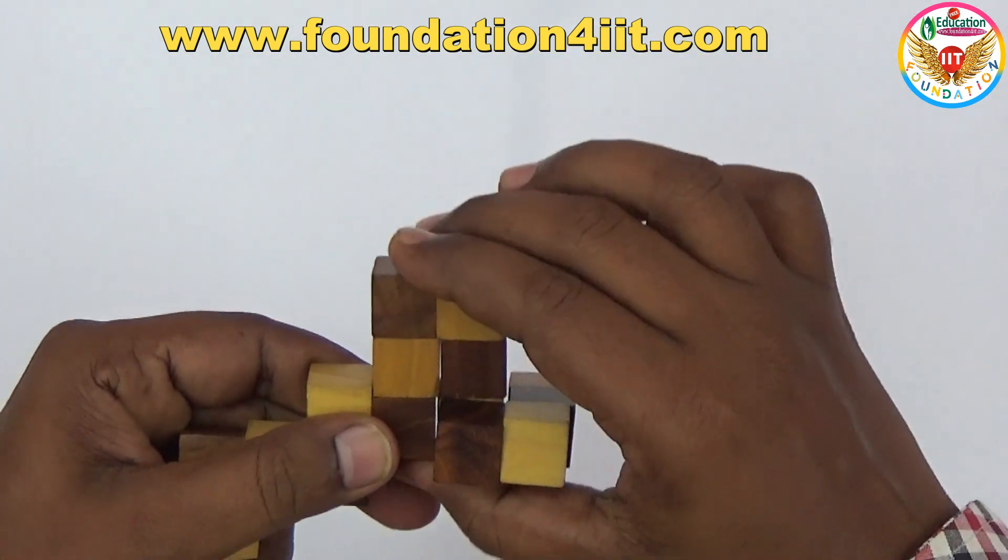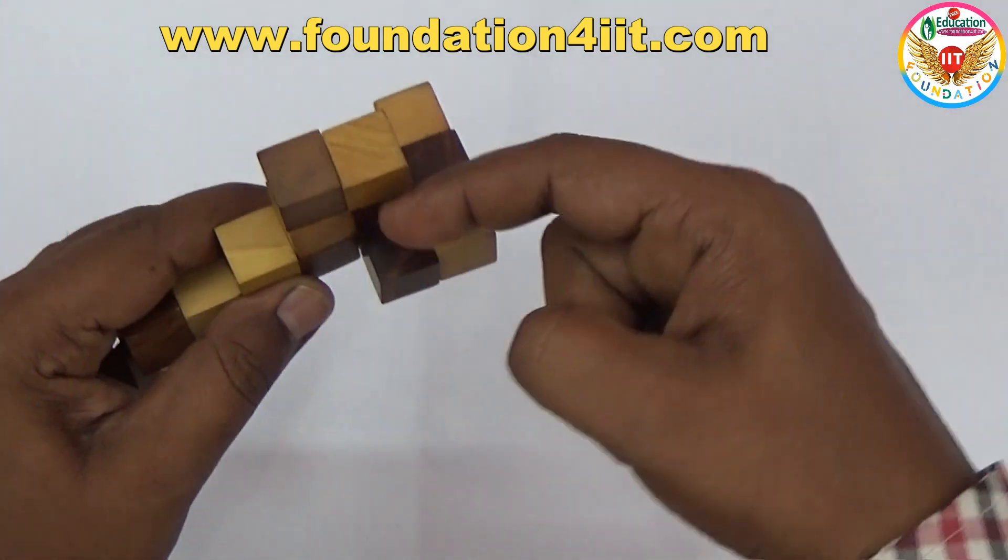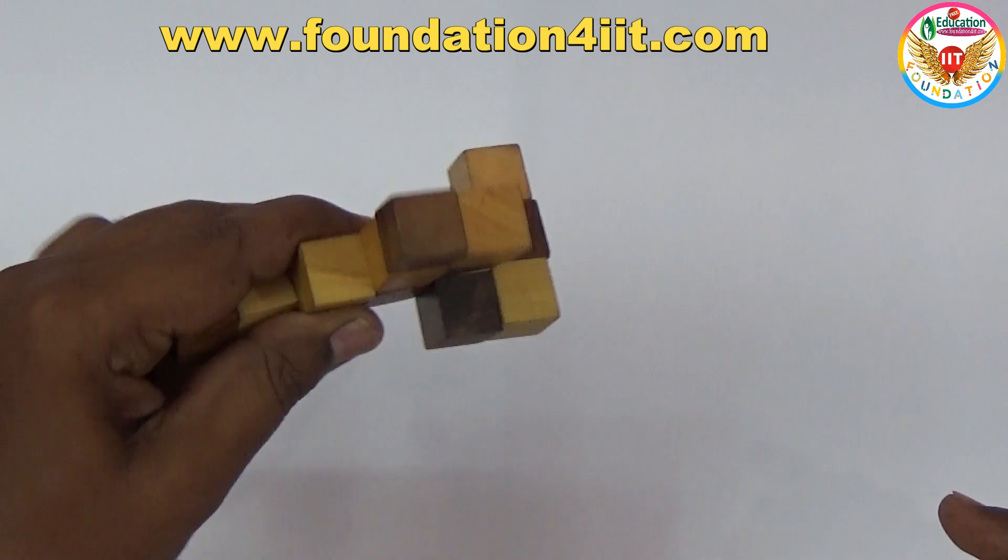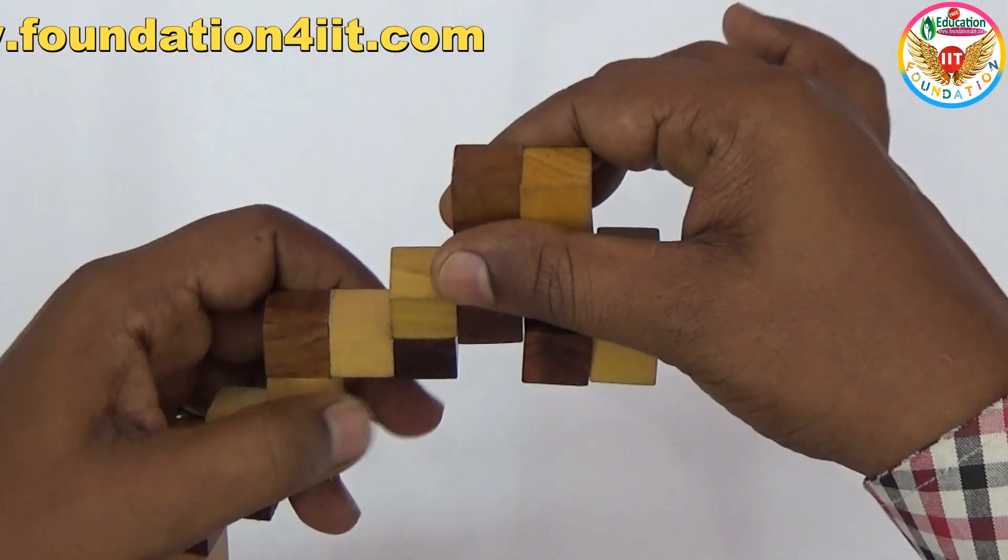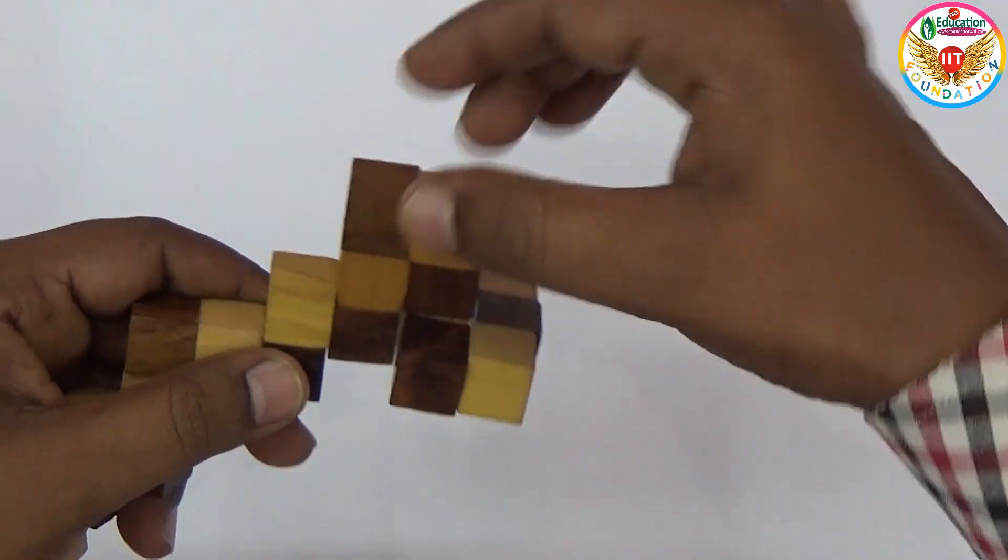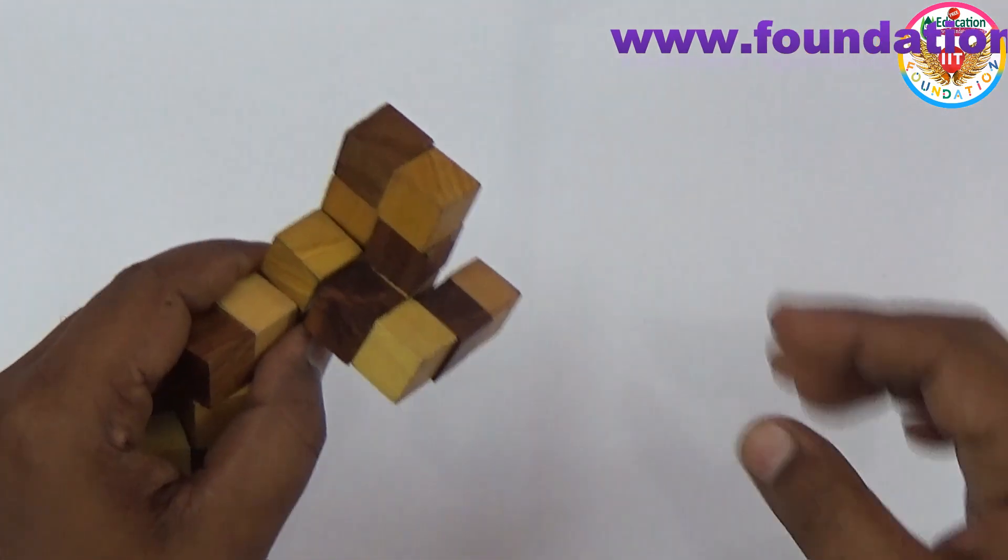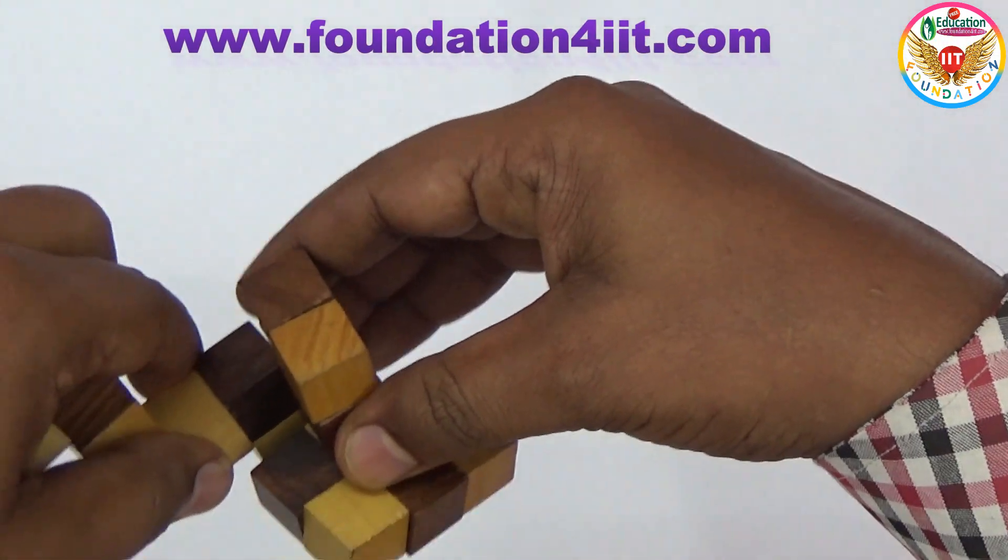In this way you should arrange. Once you make this, the remaining is simple. Next, these two we can take and scroll like this. Then next set, rotate till above.